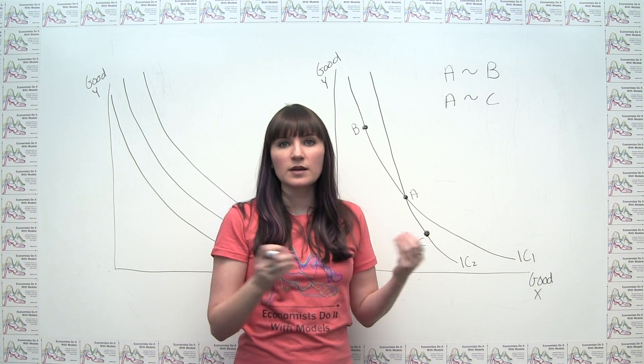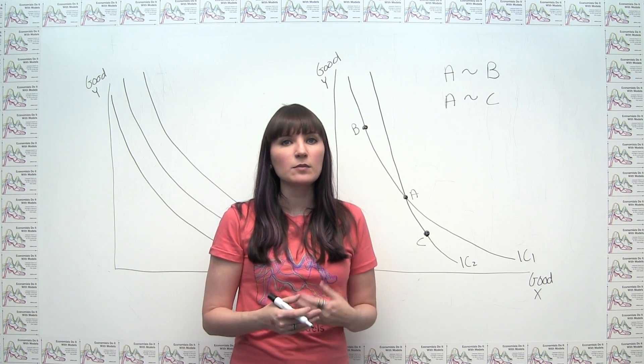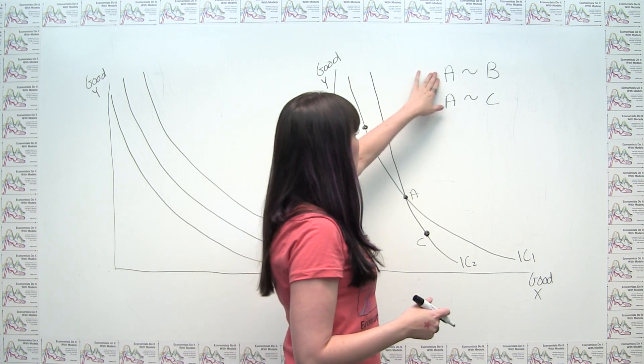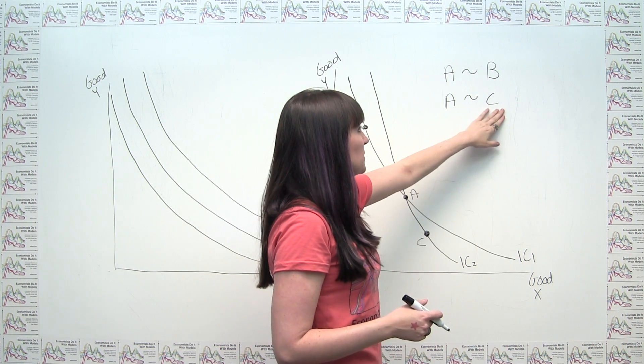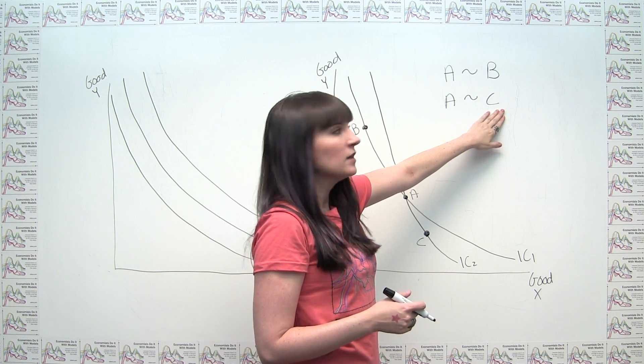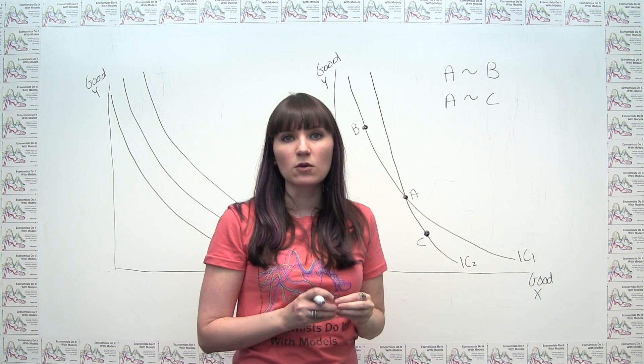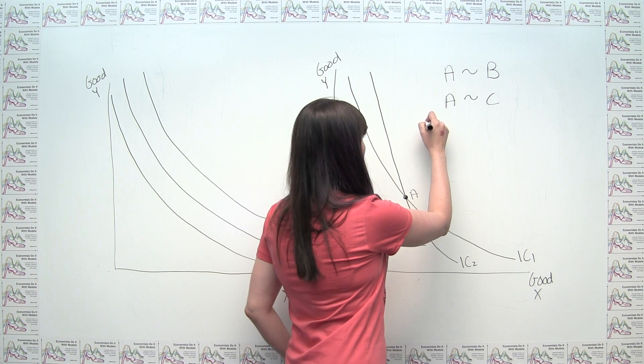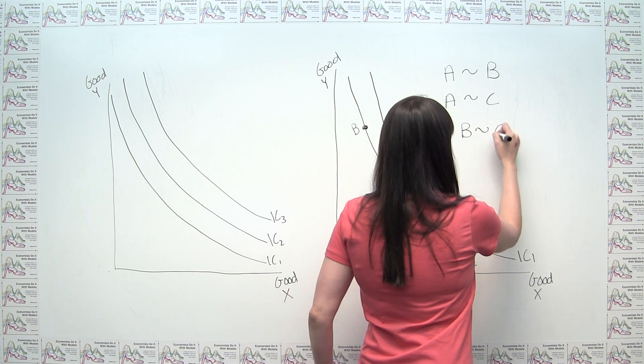In mathematics or in economics, we call this the transitive property. And what that means is that if we're indifferent between A and B, and we're indifferent between A and C, it then follows that we should logically or rationally be indifferent between B and C.